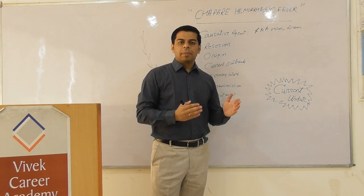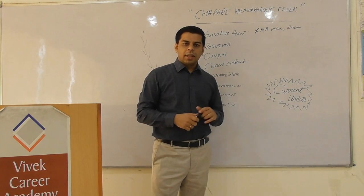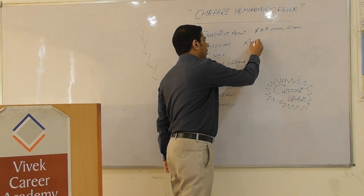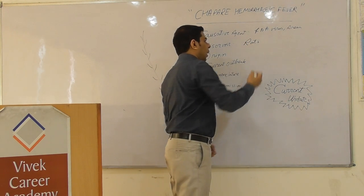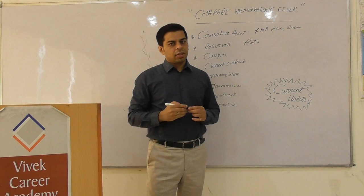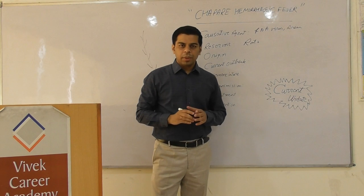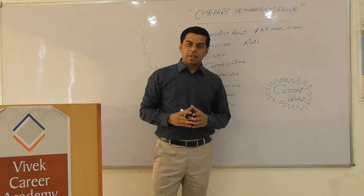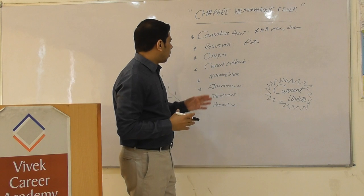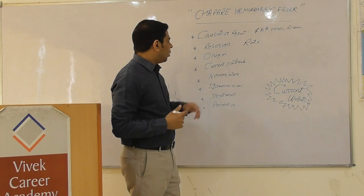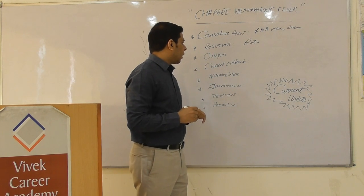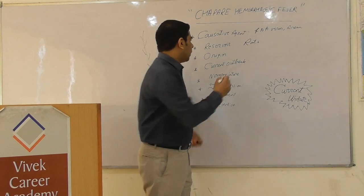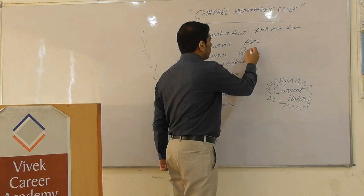The reservoir — just as we have seen in the case of Ebola where it used to be bats — here it is rodents, and more specifically rats have been associated as the likely reservoir through which the infection is transmitted. So once again it falls under the category of hemorrhagic diseases.